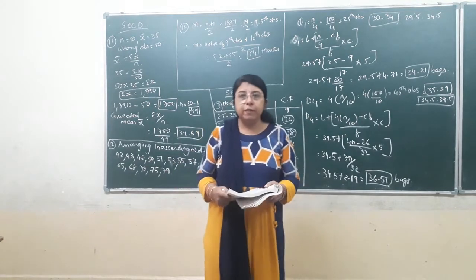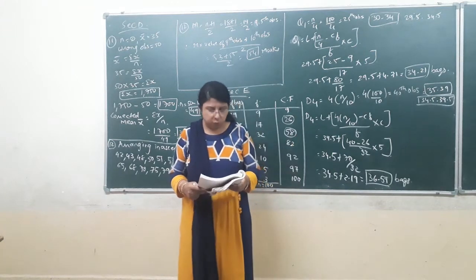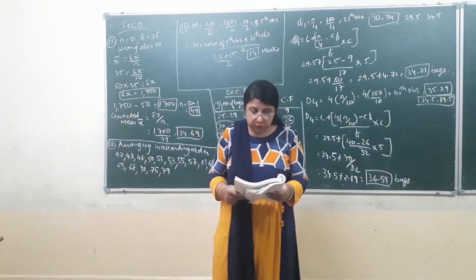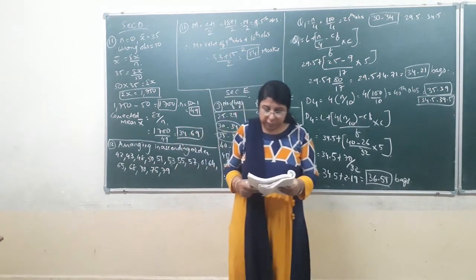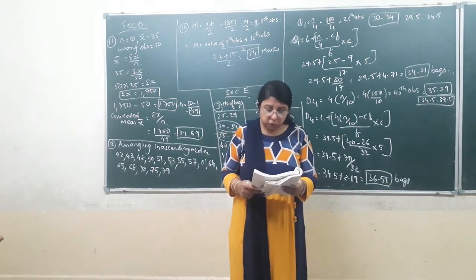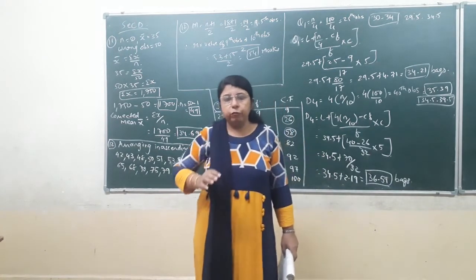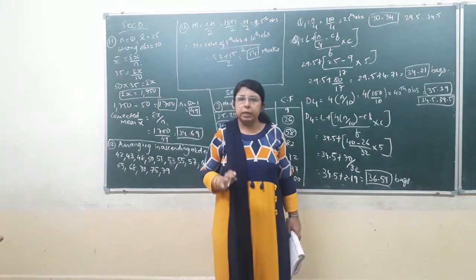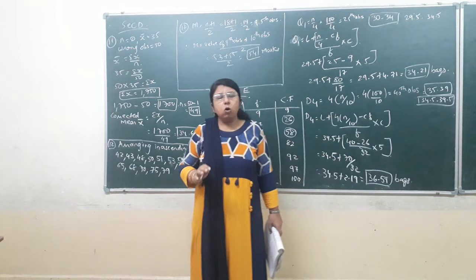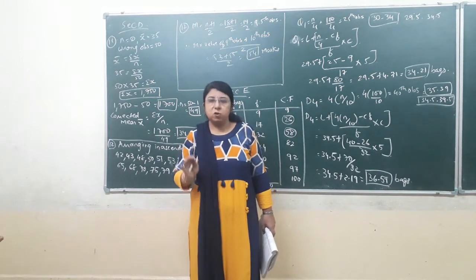Let us read question number 11 of section D, that is on page number 170 of your textbook. The mean of 50 observations is 35. Later on, it was known that the value of one observation was taken as 50, which was wrong. Find the mean of remaining observations by excluding the wrong observation. It means total there are 50 observations and the mean that came was 35. Now, one observation that is 50 was a wrong observation, so we have to find the corrected mean after excluding that observation.